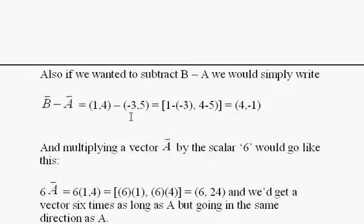(1, 4) minus (-3, 5). I'm going to subtract -3 from 1, and I'm going to subtract 5 from 4, and when I do that, I get (4, -1).